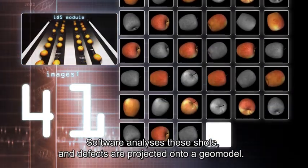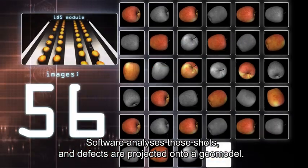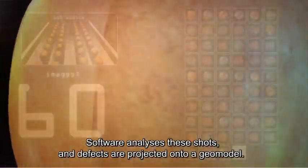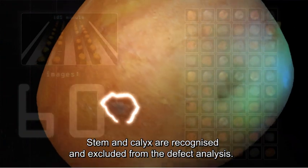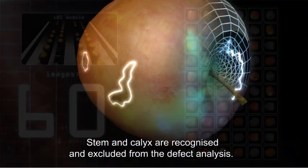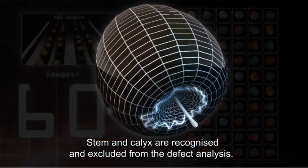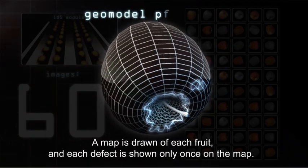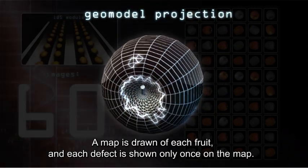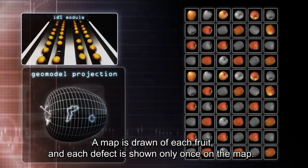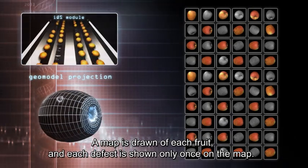Software analyzes these shots and defects are projected onto a geo-model. Stem and calyx are recognized and excluded from the defect analysis. A map is drawn of each fruit and each defect is shown only once on the map.